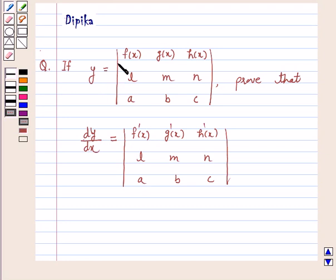If y is equal to determinant whose elements are f(x), g(x), h(x), l, m, n, a, b, c, prove that dy/dx is equal to determinant f'(x), g'(x), h'(x), l, m, n, a, b, c.